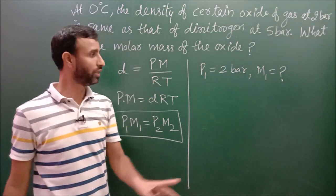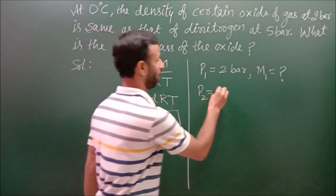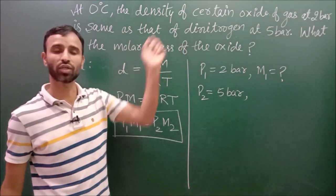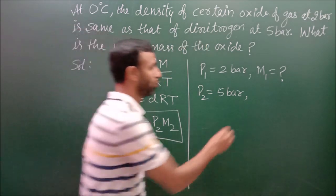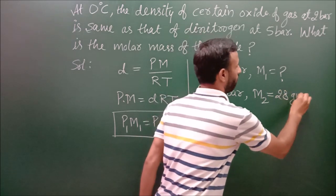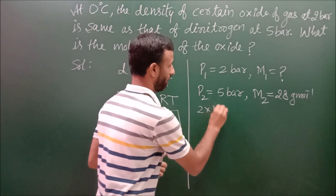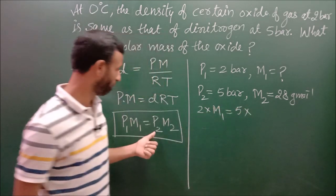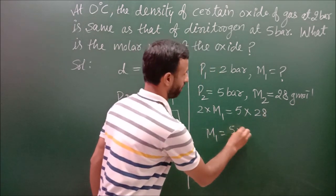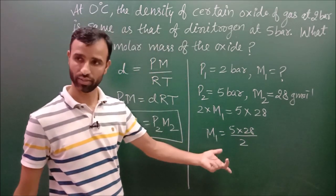So we have certain oxide, M1 we have to find out. So just put the values. P1 is 2, M1 equal to P2 5 into 28. So M1 comes out to be 5 into 28 over 2. So M1 is 70 grams per mole.